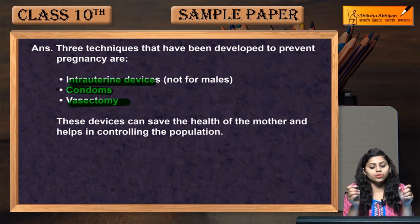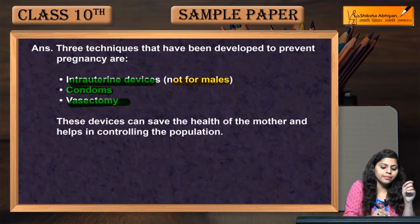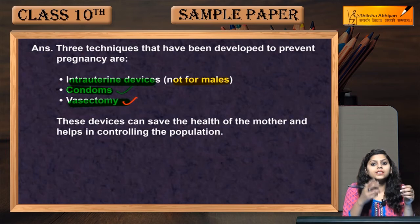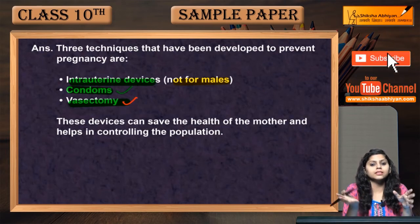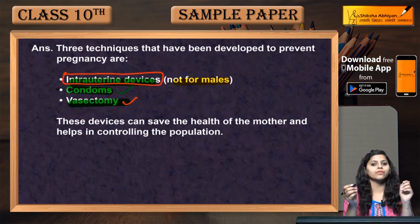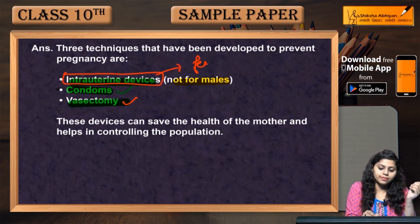Intrauterine devices are not meant for males — these are for females. Condoms are used by men, and vasectomy, which involves the vas deferens tie-up, is also for males. So intrauterine devices are the technique not meant for males.